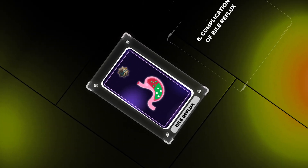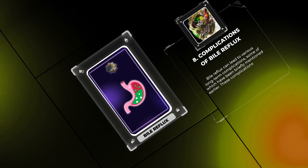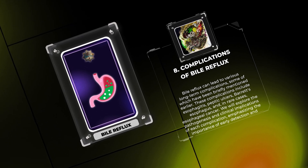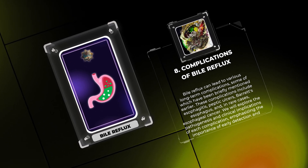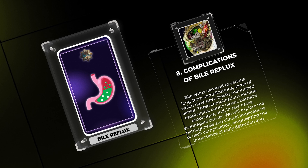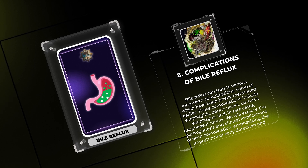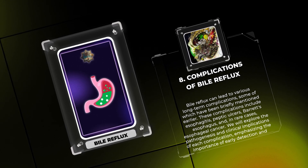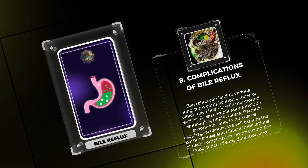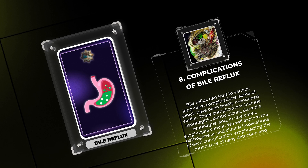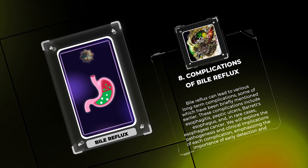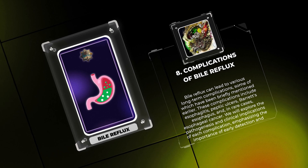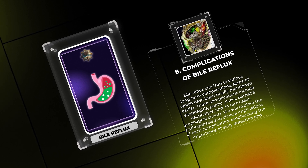Bile reflux can lead to various long-term complications. These complications include esophagitis, peptic ulcers, Barrett's esophagus, and, in rare cases, esophageal cancer. We will explore the pathogenesis and clinical implications of each complication, emphasizing the importance of early detection and intervention.